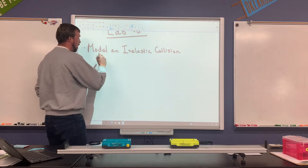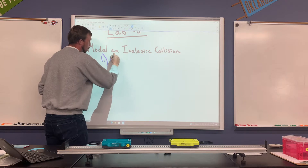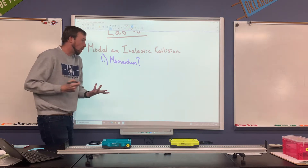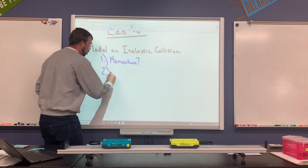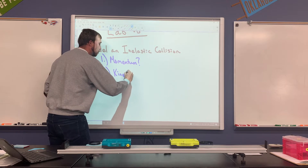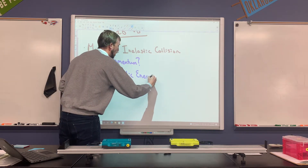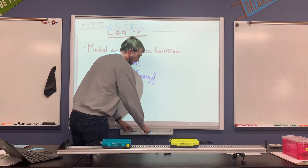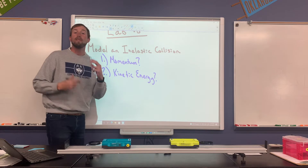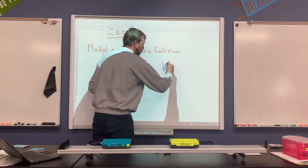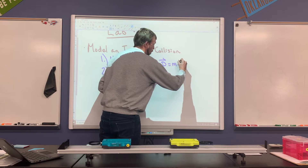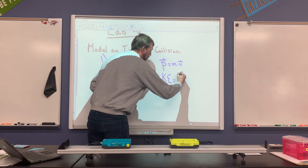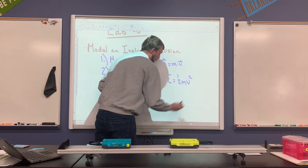We're going to check two main things: number one, what's going on with the momentum — is the momentum before and after the collision actually conserved? And number two, what's going on with the kinetic energy in our system. Both momentum and kinetic energy require the same variables: the mass and velocity of our objects both before and after they collide.